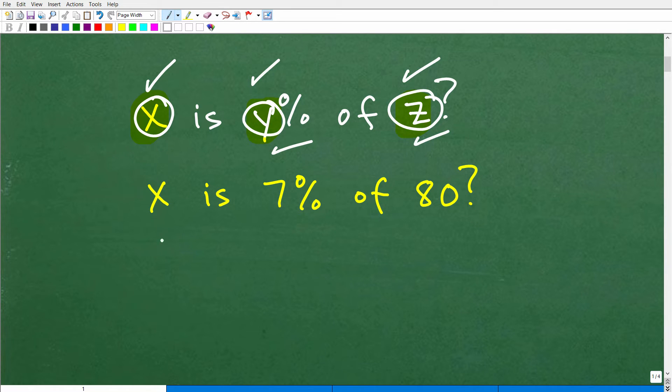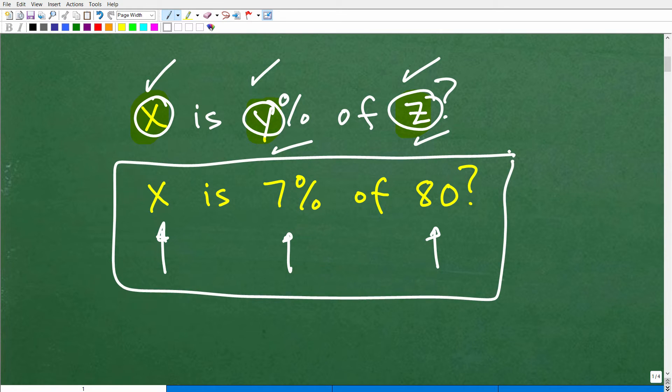So let's go ahead and replace Y and Z with actual numbers. So that would look something like this, X is, and then I'm going to put 7 for Y. So X is 7% of, and then for Z, we'll put 80. So X is 7% of 80. So now here, ask yourself, do I know how to do this problem? Well, this should be a pretty easy problem for you to do.